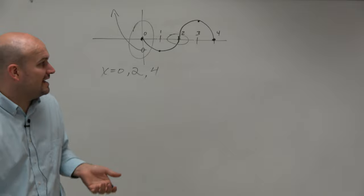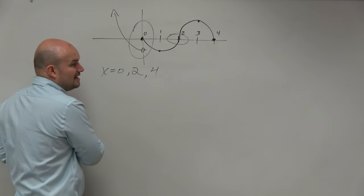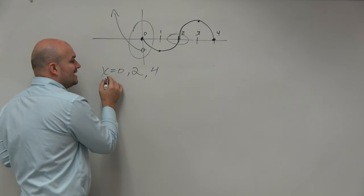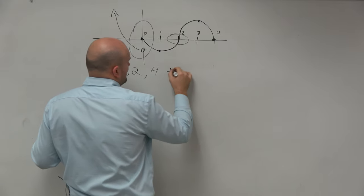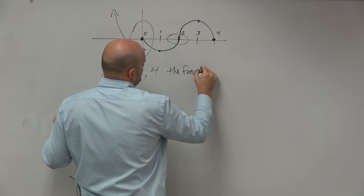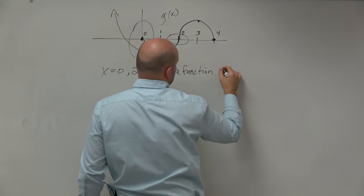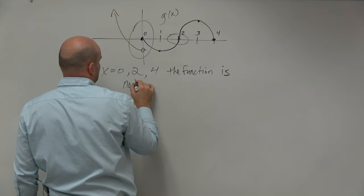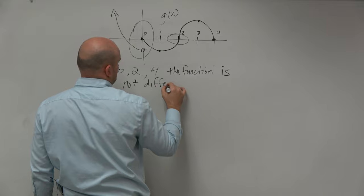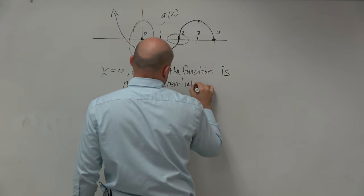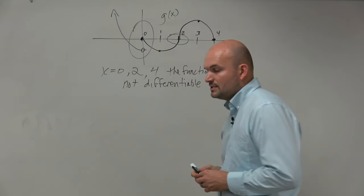So therefore, that again is also a point where it is not going to be differentiable. So at x equals 0, 2, and 4, the function, let's call this g of x, is not differentiable.